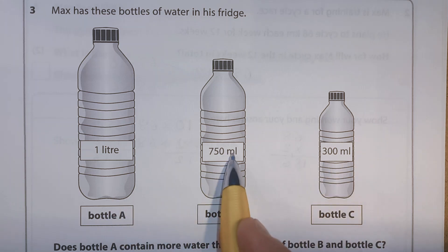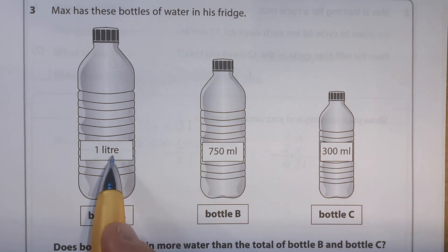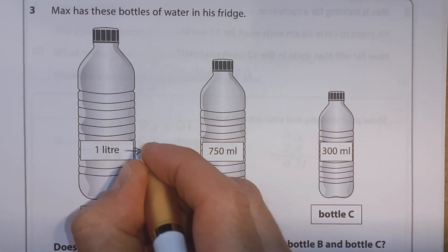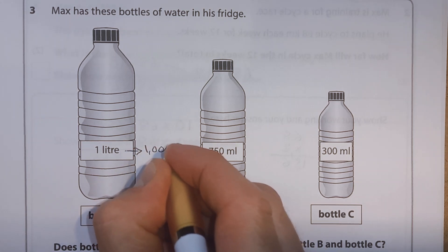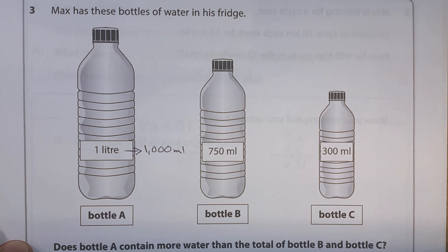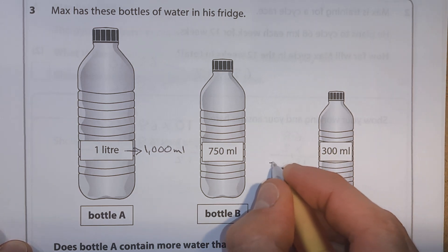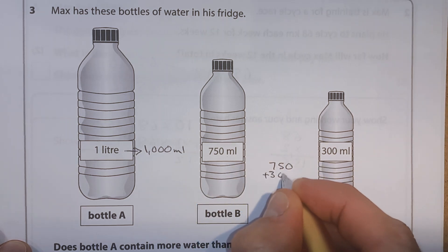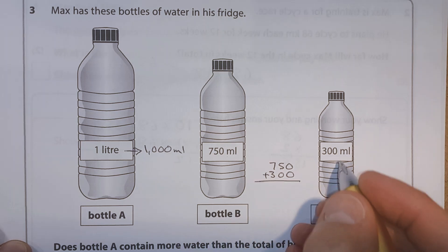Does bottle A contain more water than the total of bottle B and bottle C? Well, these are both in milliliters. This is in liters. So we want to convert them so they're all in the same units and it's easier to compare. Well, one liter is equal to 1000 milliliters. We're interested in the total of bottle B and bottle C. So we want 750 milliliters from here and we want to add on 300 milliliters from here.